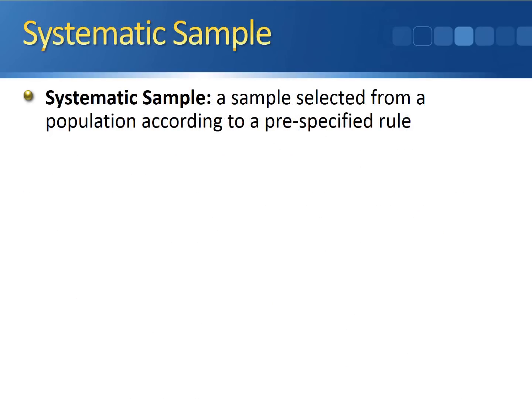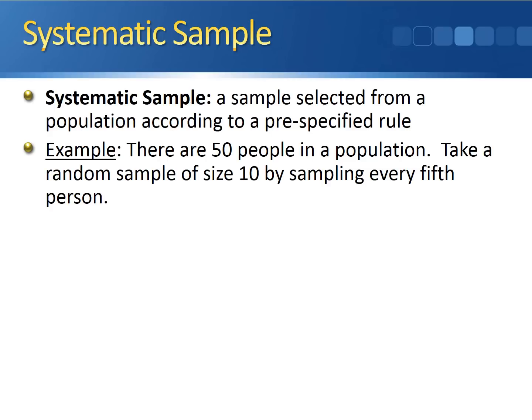A systematic sample is a sample selected from a population according to some pre-specified rule. For example, let's say we're working with our same population of 50 people and we take a random sample of size 10 by sampling every fifth person. This every fifth person is the rule that we're abiding by in order to choose our sample. So think about it this way.